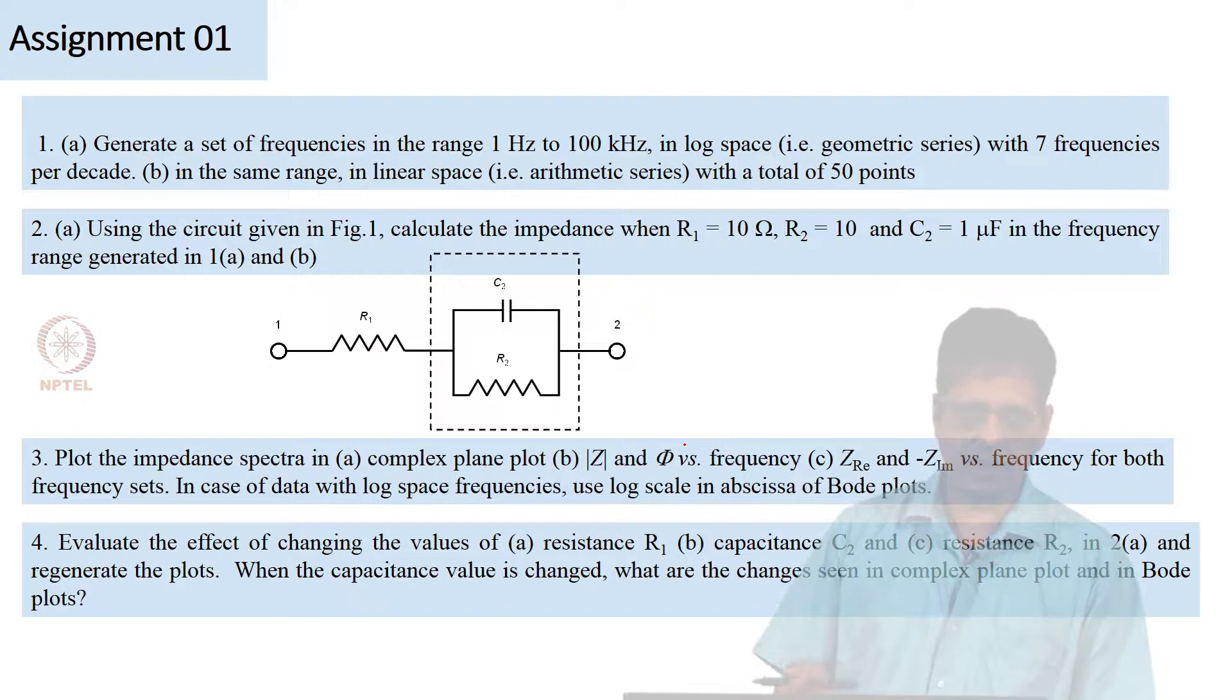What happens if you change the capacitance value? C2 of 1 microfarad, we can make it half microfarad, 5 microfarad and then plot them again in the Bode plot, in the complex plane plot. So is there a difference between the one that is plotted now versus the one which was plotted with the original set of values which is 10 ohm and 1 microfarad. So if I put both of them in the same plot, will I be able to tell the difference?